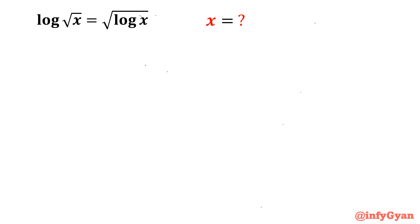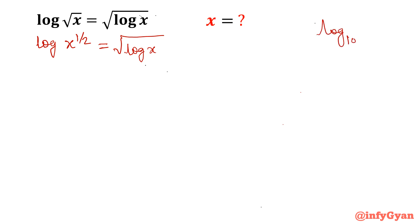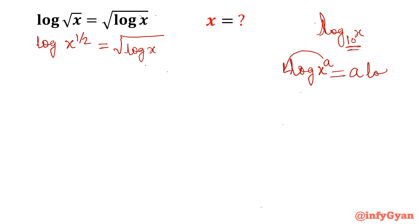Log root x is equal to root log x. Let me consider root x as x to the power half, so we have x to the power half equal to square root of log x. Log here means log base 10. So log of x to the power half equals square root of log x. Using the logarithm power rule, log of x to the power a equals a times log x, this becomes half log x equals square root of log x.